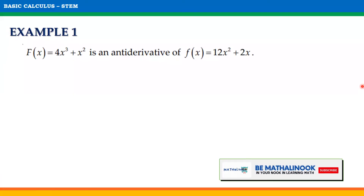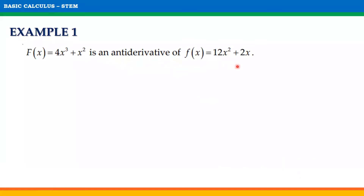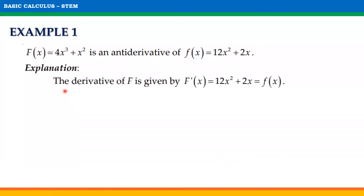Let us examine this example. Capital F of x equal to 4x cubed plus x squared is an antiderivative of f of x equals 12x squared plus 2x. Notice that when we get the derivative of capital F, we get 12x squared plus 2x, which is equal to f of x. Thus, capital F of x is the antiderivative of f of x.